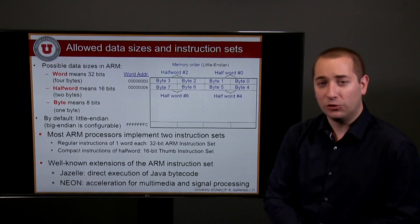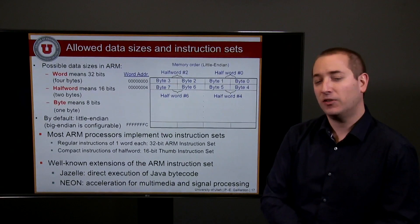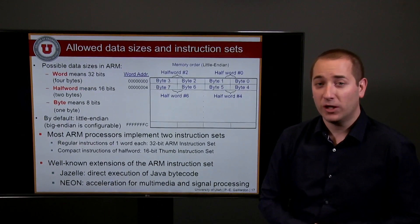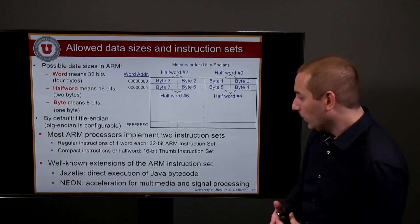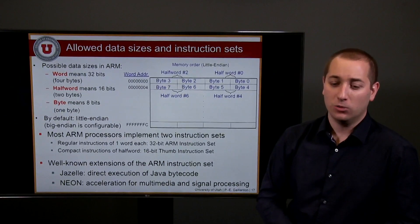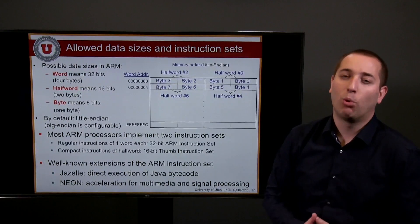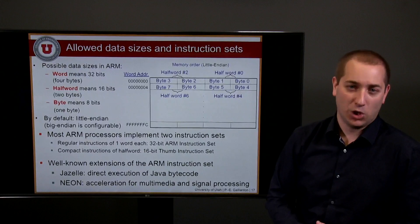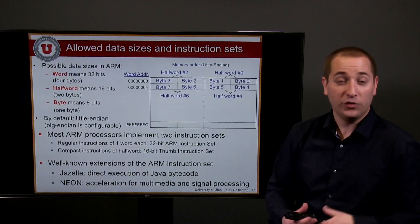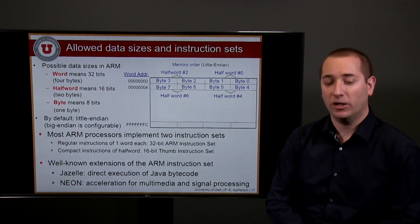In addition to the main instruction sets, there are well-known extensions of the ARM instruction set made for very specific applications. Two notable ones are the Jazelle instruction set and the NEON instruction set. NEON is designed for multimedia and signal processing, while Jazelle is made to support Java bytecode natively, implementing systems that can natively execute Java operations instead of running a compiled version.